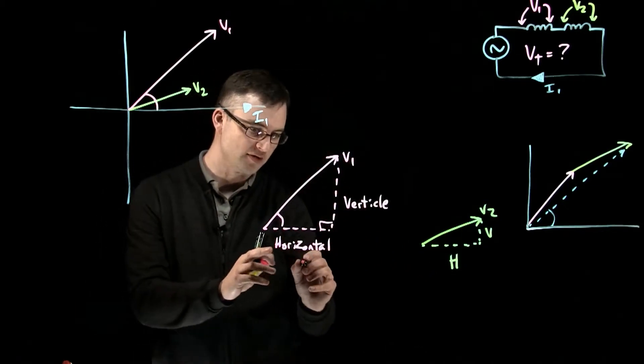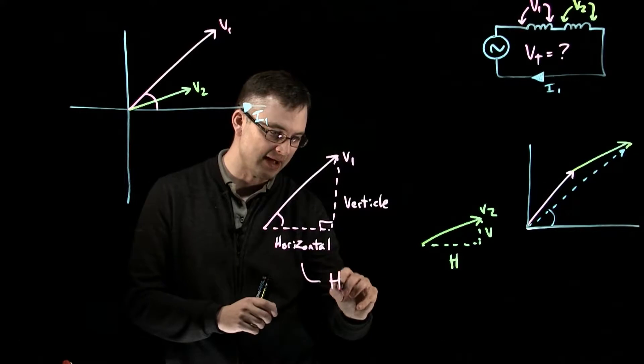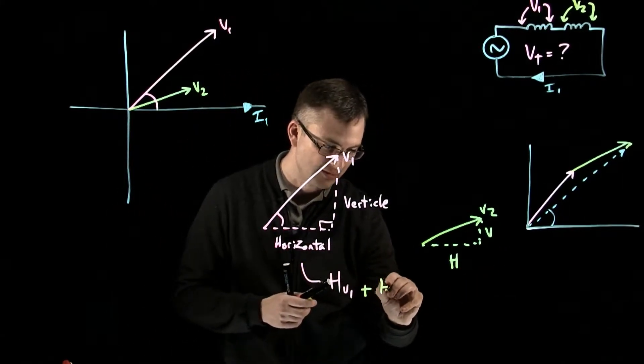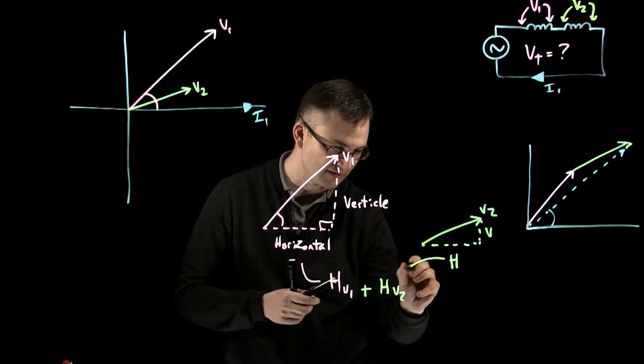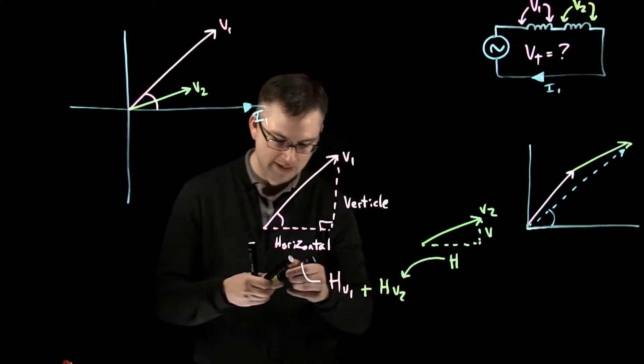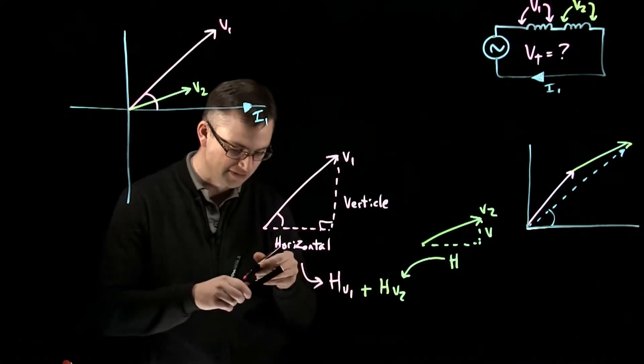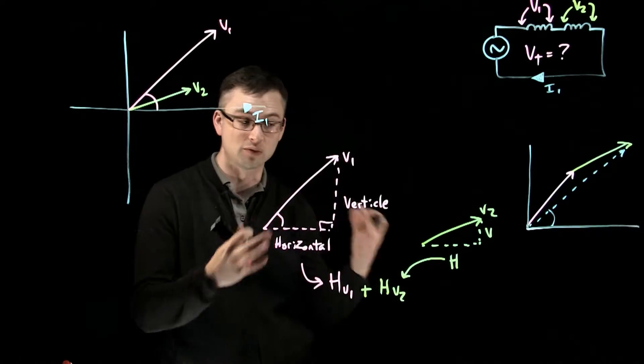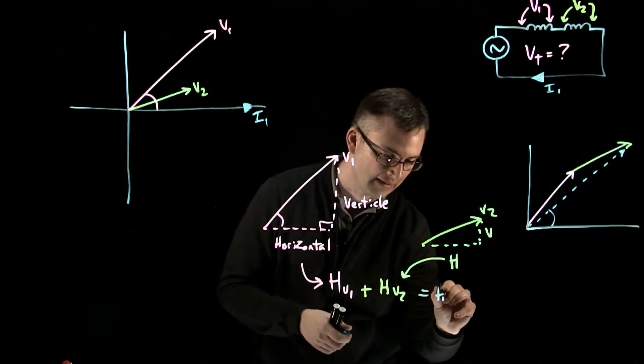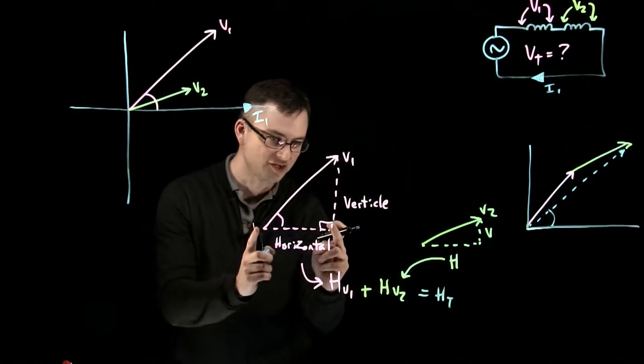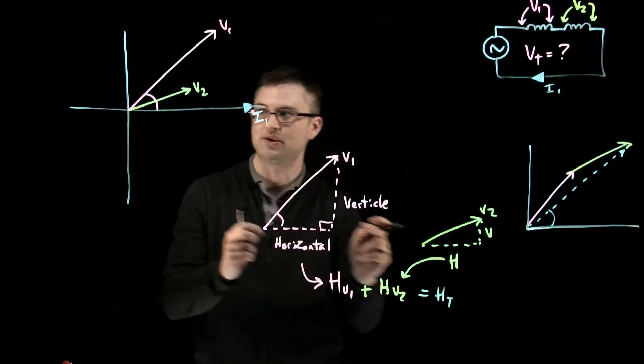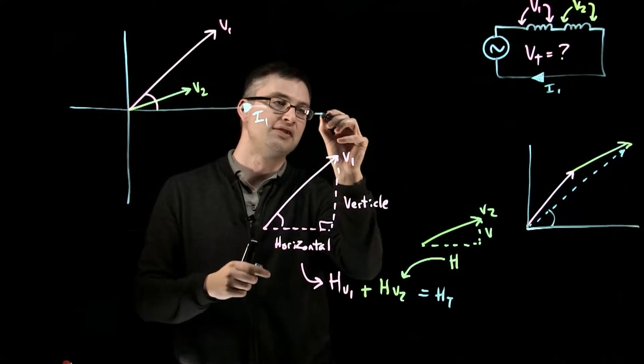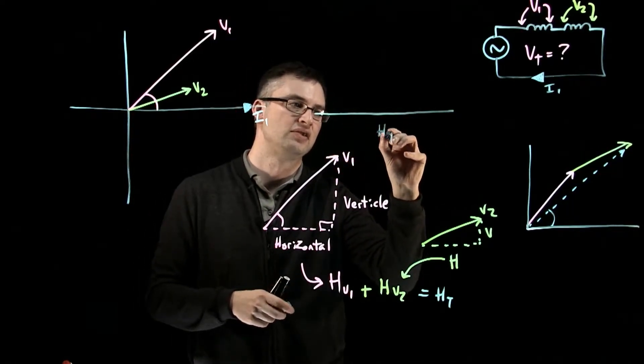So if I take the horizontal here, I'll call that the H of V1, and I add it to the H of V2. So I'm going to take this value and place it in here. So I've taken those two horizontal components. I'm going to get the total phasor, the total resultant horizontal component. So I'll call that the H total. So what does that look like? It's going to be about this much plus this much. So I'm going to say, just guesstimate something like that. So that'll be our H total.